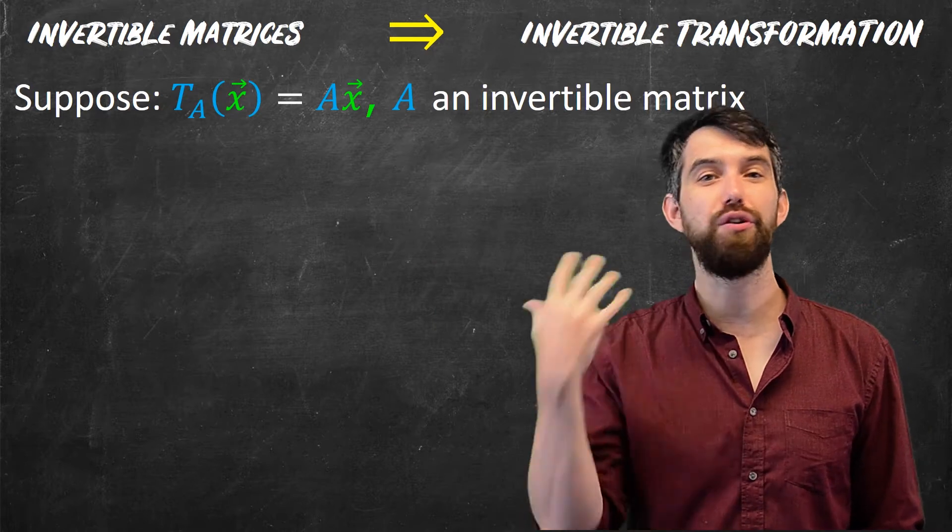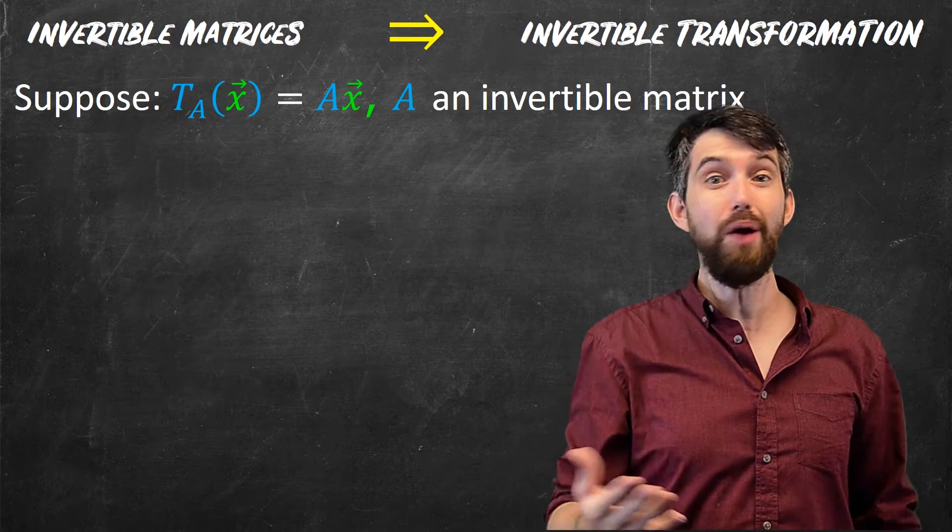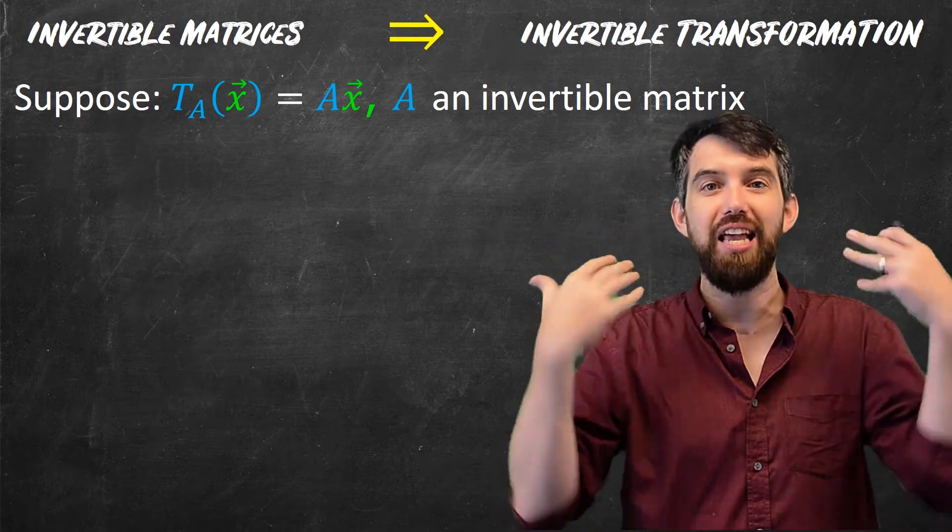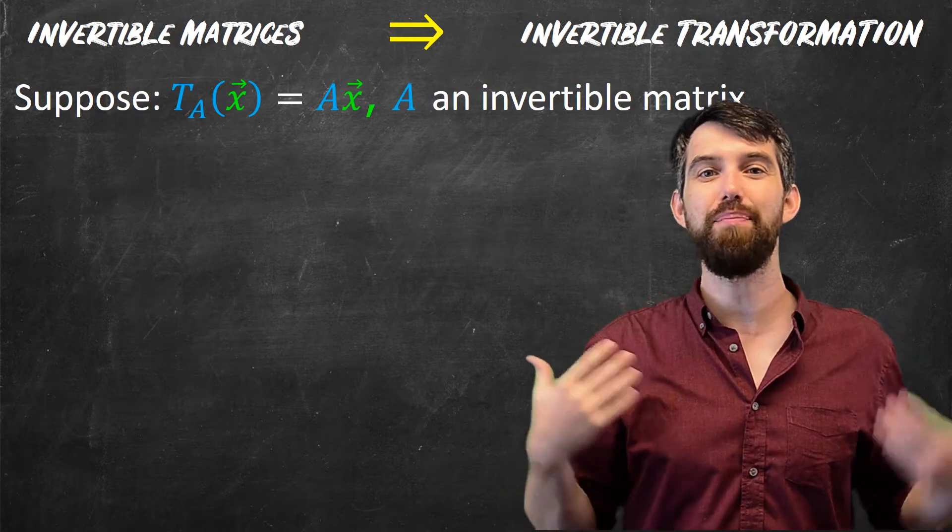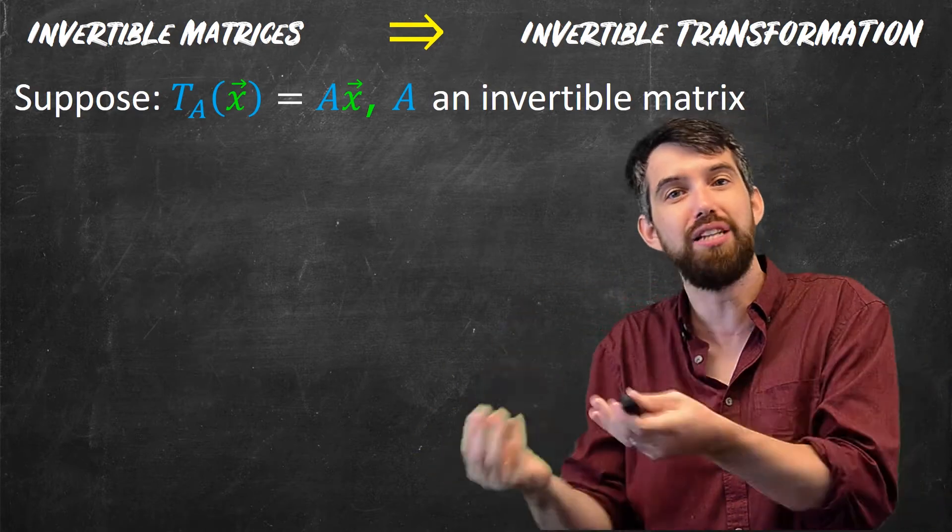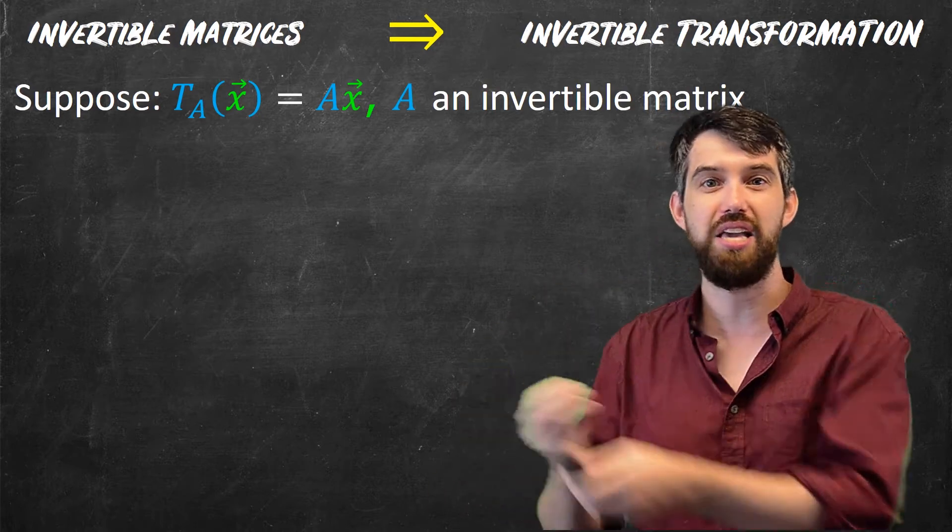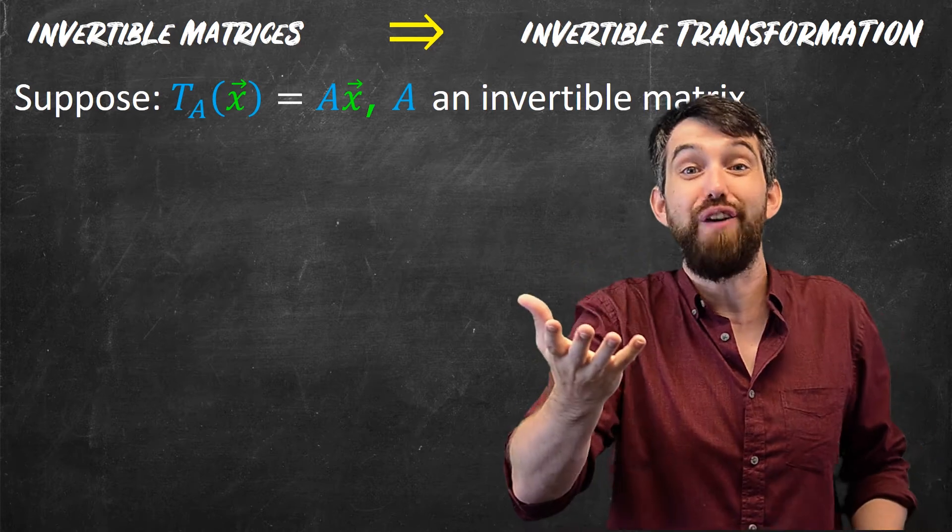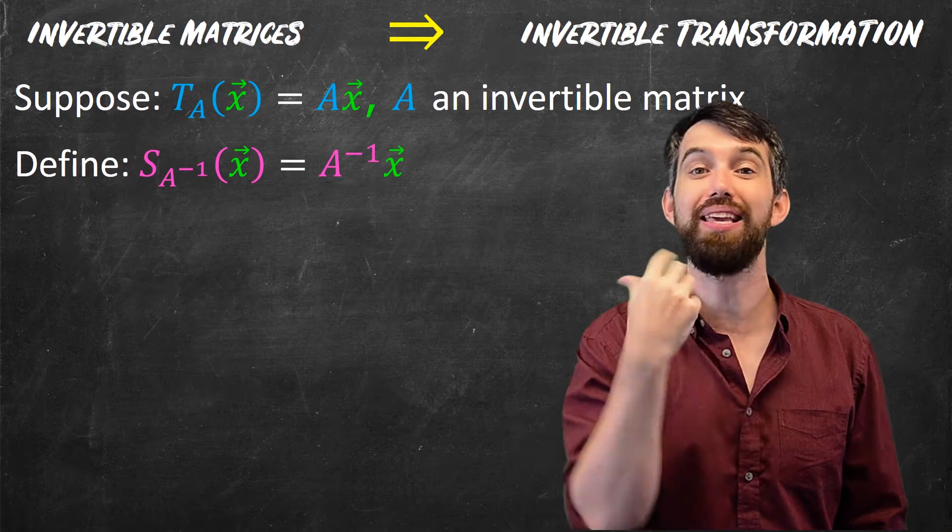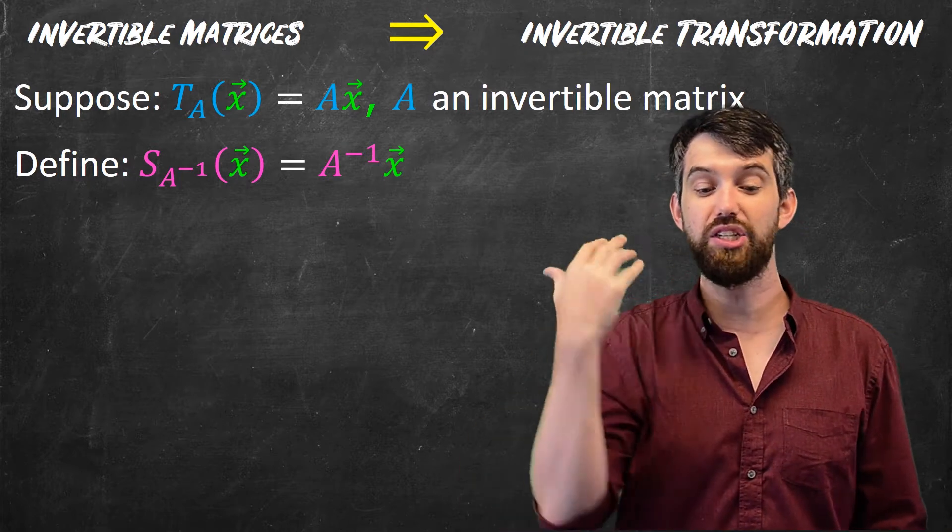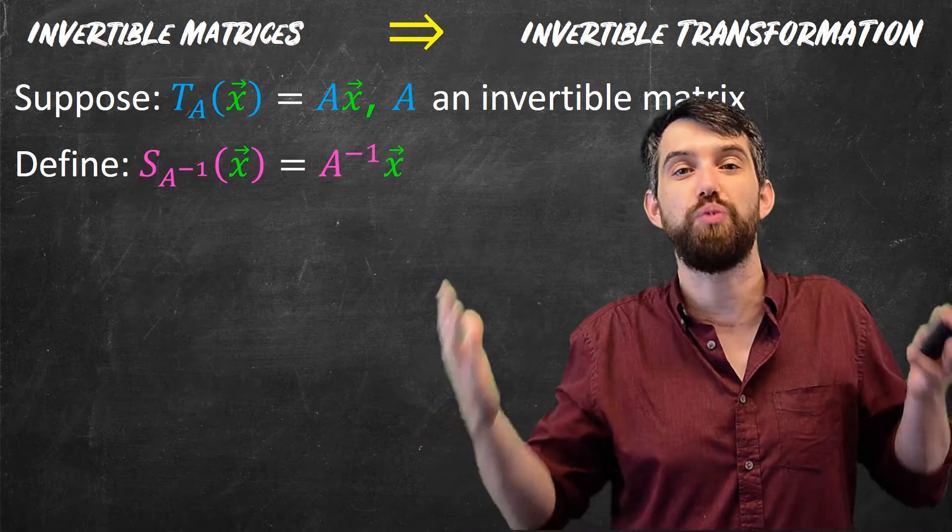Now, I don't have an inverse transformation S yet. I have an inverse matrix A inverse. So what I want to do is I want to find an inverse transformation to the T, and there's an obvious guess. What if I make my guess for the inverse transformation the transformation whose matrix representation is A inverse? So I'm just going to define it and see if it works. I'm going to define my S_{A inverse}. This is my candidate to be an invertible transformation. This is just the transformation where it just takes any vector x and multiplies it by A inverse. It seems reasonable.